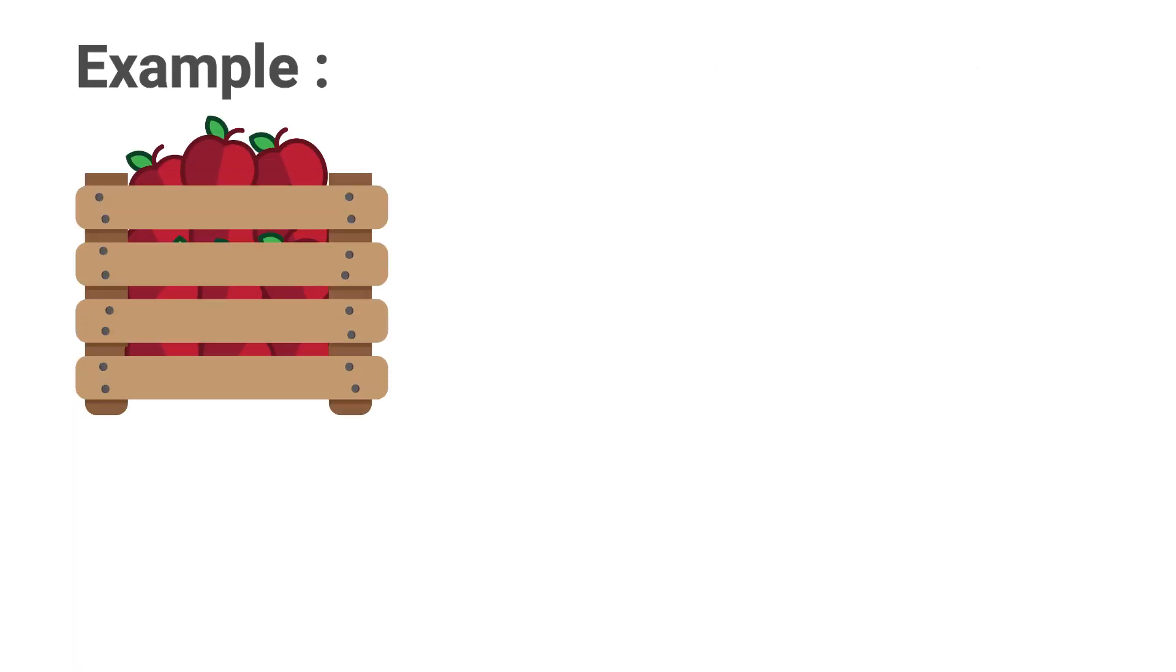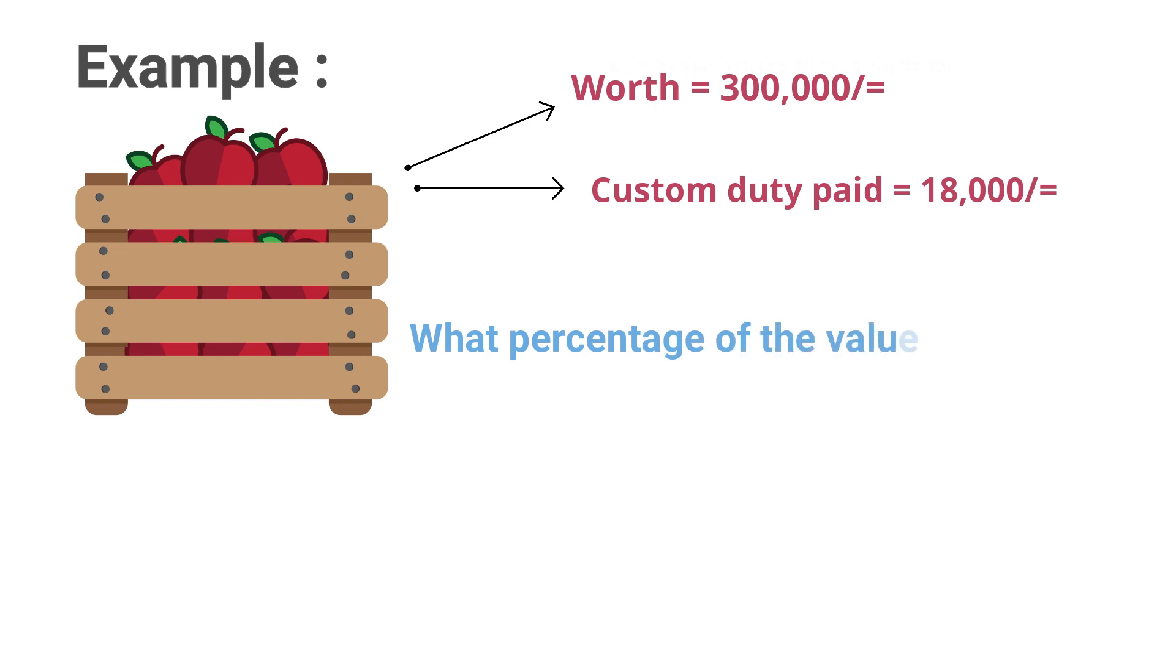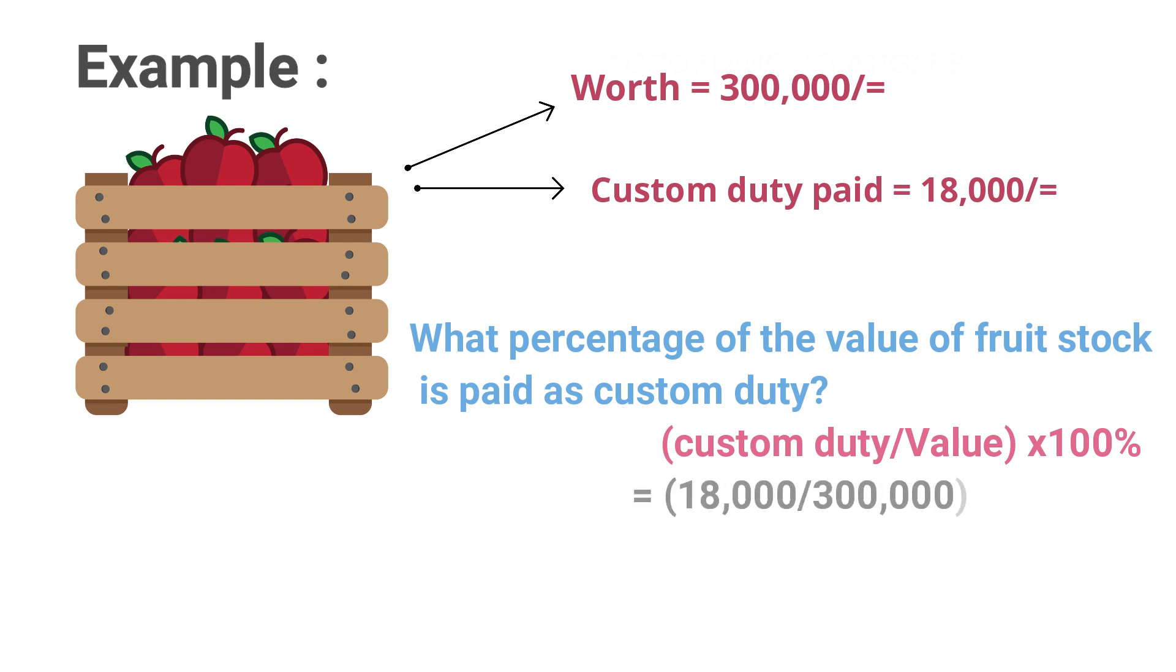Look at this example now. A stock of fruits worth 300,000 is exported by paying 18,000 rupees as custom duty. What percentage of the value of the stock is paid as custom duty? It can be simply calculated by dividing custom duty charged by the value into 100 percent. That is 18,000 over 300,000 into 100 percent, which gives you 6 percent.